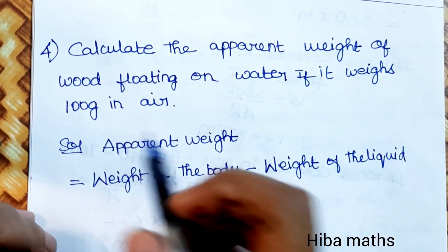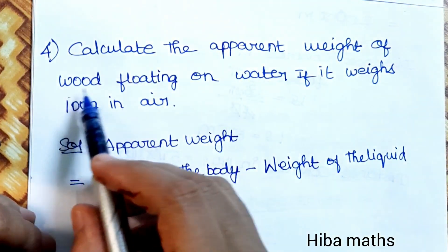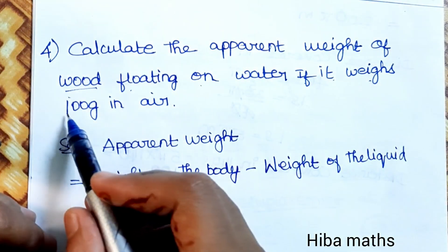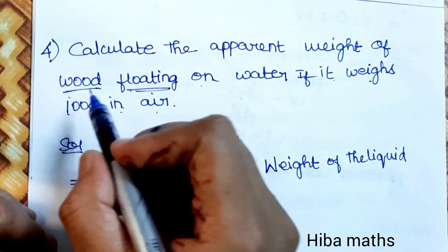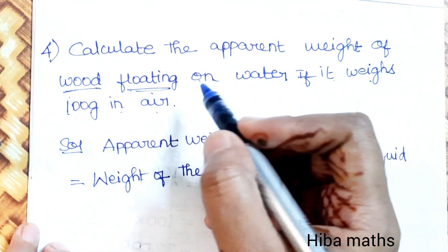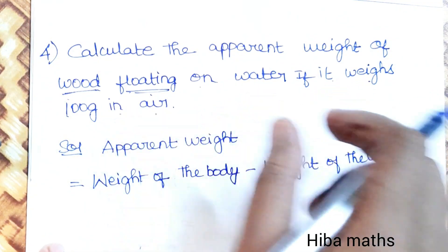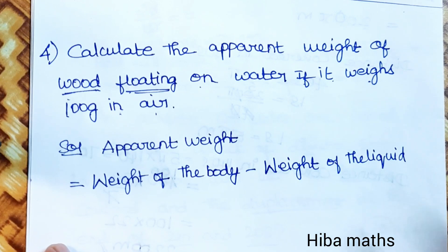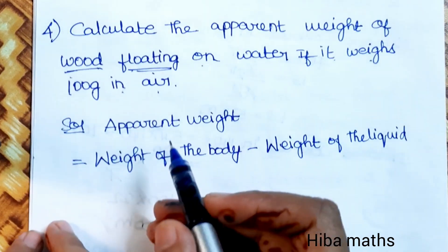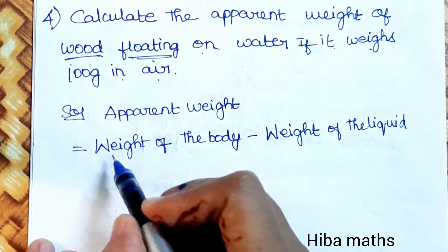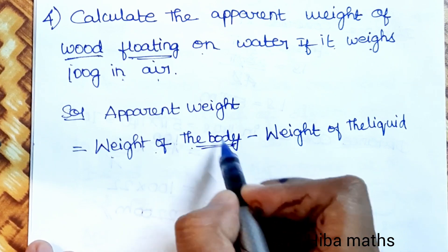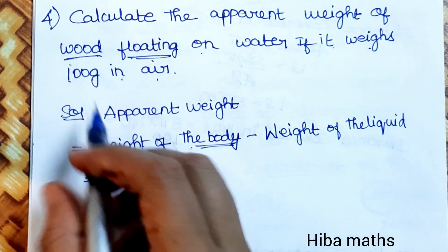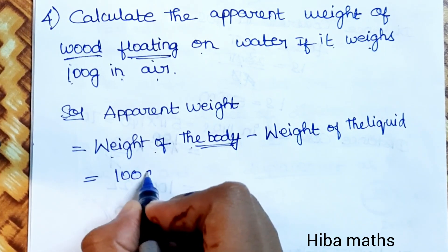Fourth question: calculate the apparent weight of wood floating on water, if its weight is 100 grams in air. The wood is floating on water. Apparent weight equals weight of the body minus weight of liquid displaced. Weight of wood is 100 grams.